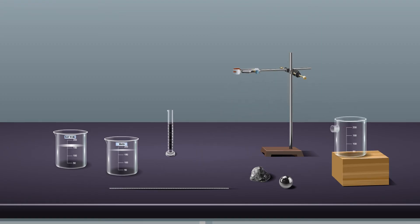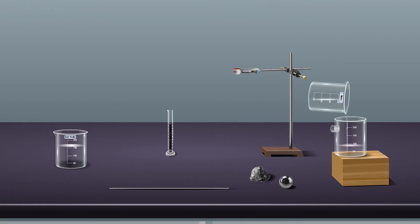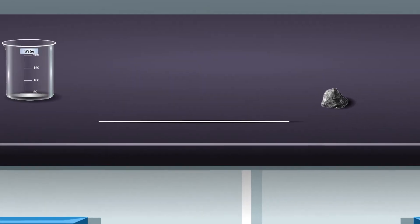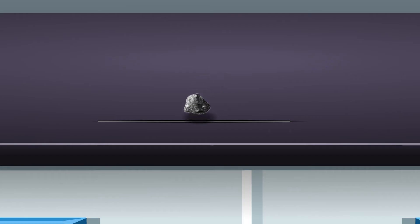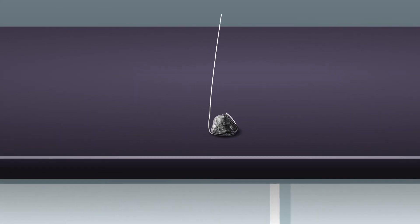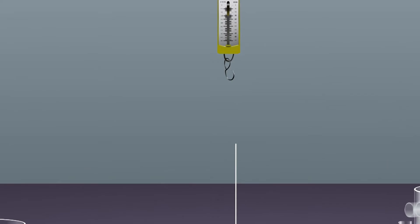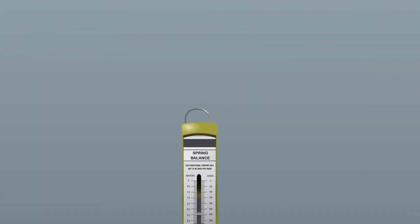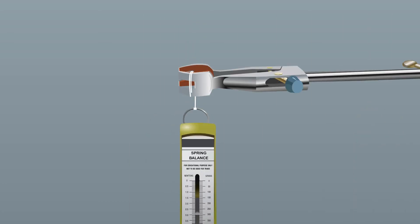Place the overflow can on a wooden block and fill it with tap water until water begins to flow from its spout. Place the measuring cylinder at the bottom of the spout of the overflow can. Tie one object with thread, and tie the other end of the thread to the hook of the spring balance.